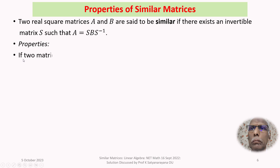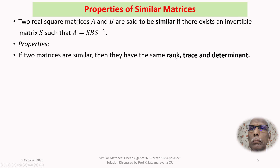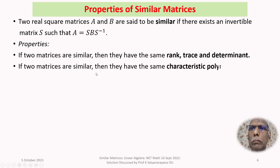If two matrices are similar, then they have the same rank, same trace, and same determinant. If two matrices are similar, they have the same characteristic polynomial, and therefore the same eigenvalues including the same algebraic and geometric multiplicities.